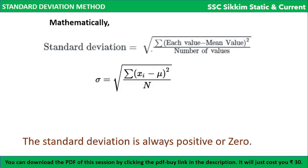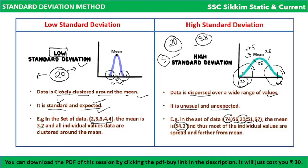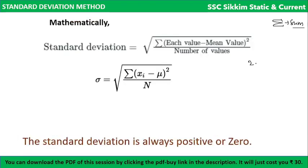The formula for standard deviation is: sigma equals the square root of the summation of each value minus the mean, whole squared, divided by the number of values. Here, sigma denotes summation. xi represents each individual value, and new (μ) represents the mean.